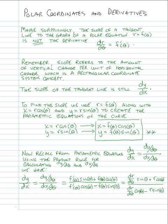This formula only works provided the denominator is not zero — that dx/dθ is not equal to zero at a particular value of θ. I wouldn't try to memorize this formula; I would remember how to derive it. If we understand where it comes from, we can create this formula anytime we're ready to use it.